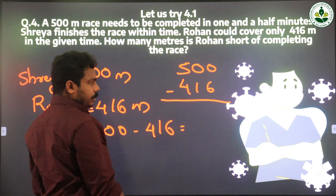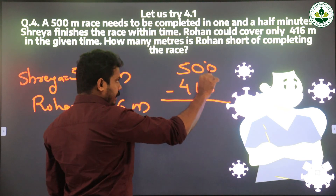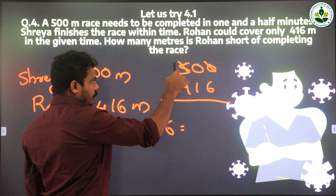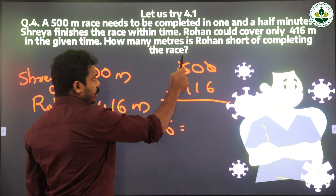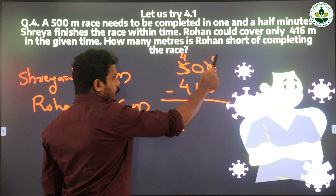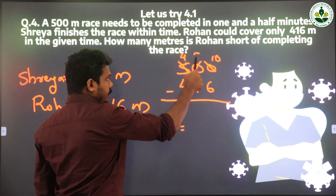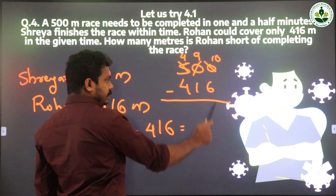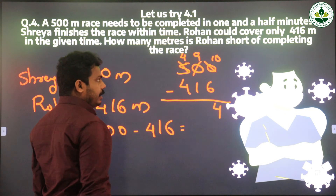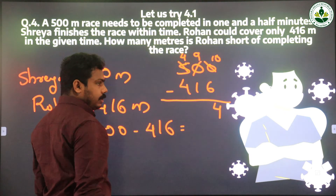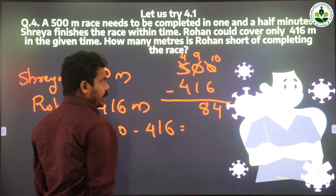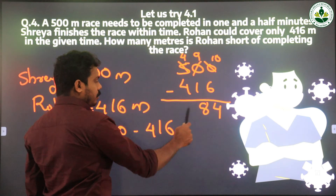We can't subtract 6 from 0, so we take 1 from the next place — but here also 0, so we move to the next place, and this 5 becomes 4. This 0 becomes 10, and the middle 0 becomes 9. 10 minus 6 is 4 (4 plus 6 is 10). 9 minus 1 is 8 (8 plus 1 is 9). 4 minus 4 is 0.